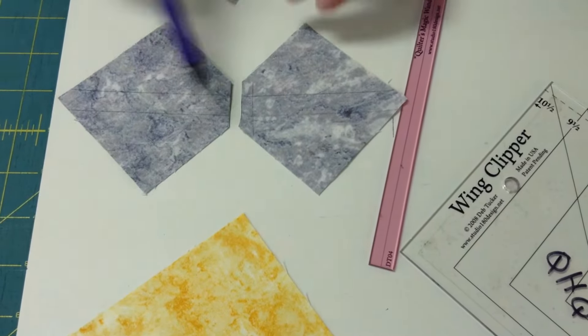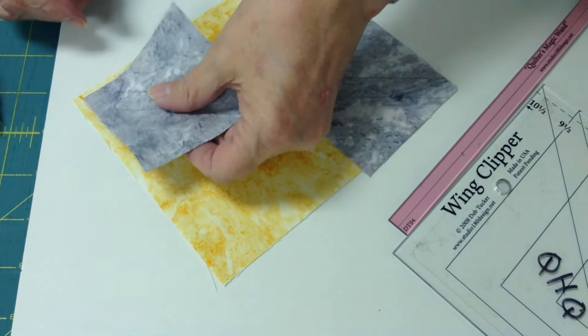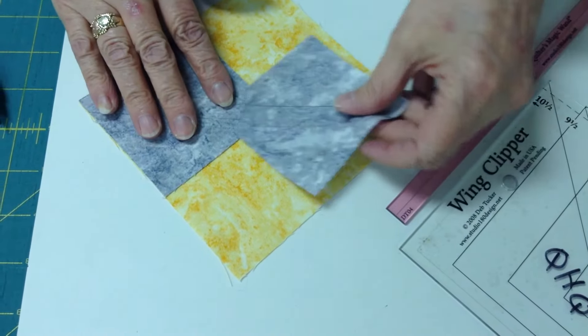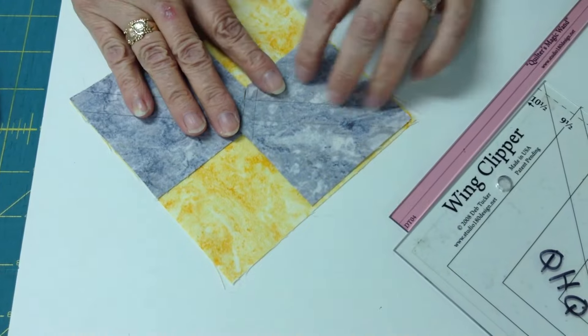So I've trimmed it off right on that line that I drew. Now when I lay them on my larger square, they meet just like this.